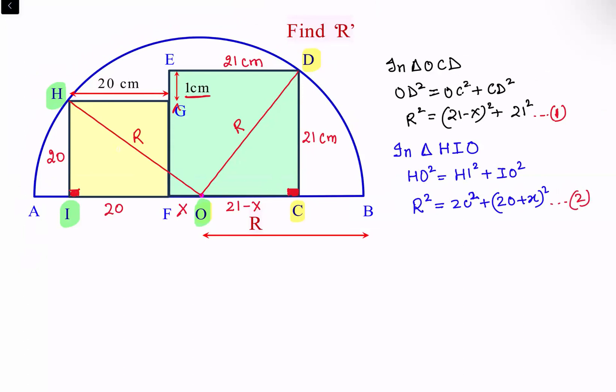If we'll compare one and two, comparing one and two, we'll get 21 minus X square plus 21 square is 20 square plus 20 plus X square.